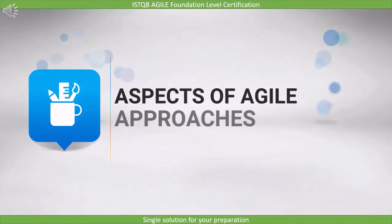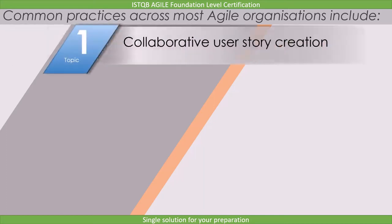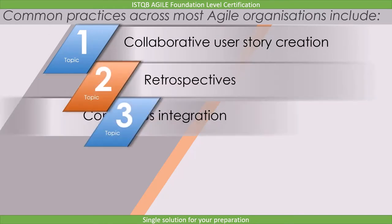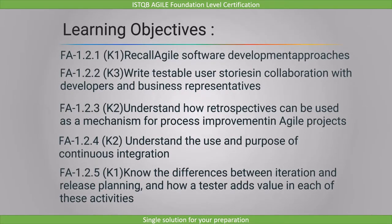There are several Agile approaches in use by organizations. Common practices across most Agile organizations include collaborative user story creation, retrospectives, continuous integration, iteration planning, and release planning. The learning objectives for this section include: recalling Agile software development approaches, writing testable user stories, understanding retrospectives as a process improvement mechanism, understanding continuous integration, and knowing the difference between iteration and release planning.